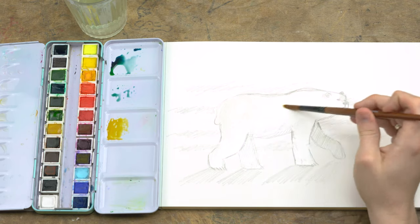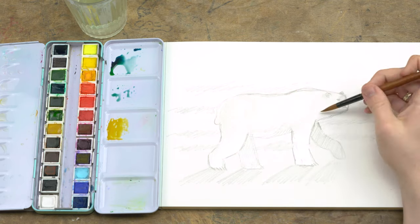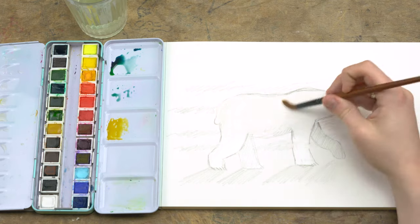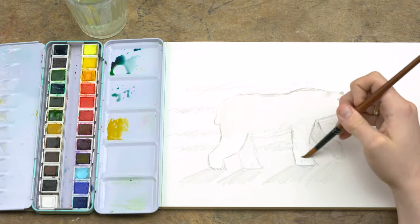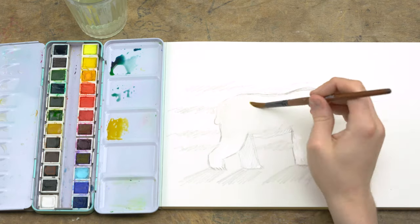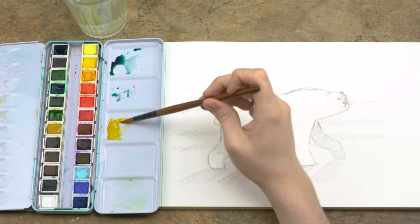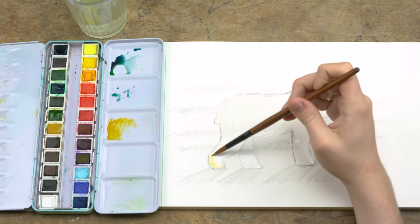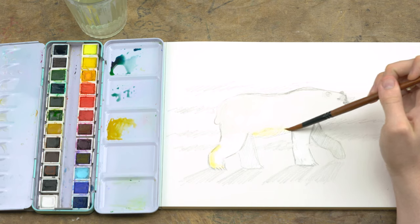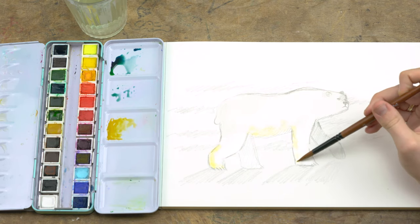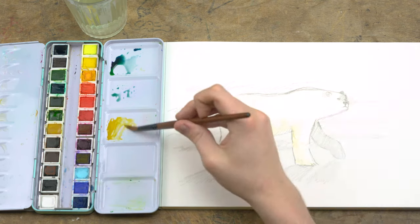Using a medium to large paint brush you can now start to apply the water for the wash for the inside of the polar bear. First I'm adding the yellow into the inside of the polar bear and you'll start to see how that paint disperses into the water layer that we put down.